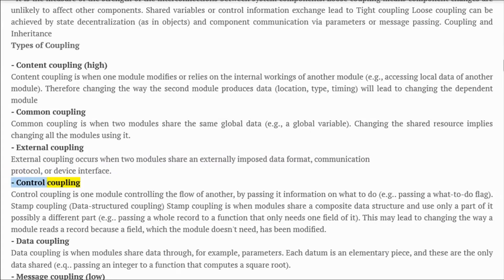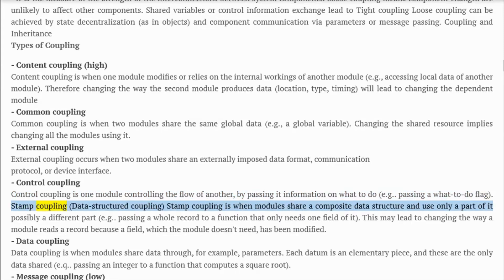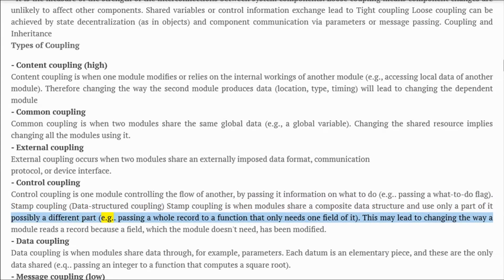Control coupling: one module controls the flow of another by passing it information on what to do, e.g., passing a 'what to do' flag. Stamp coupling (data structured coupling): when modules share a composite data structure and use only a part of it — possibly a different part — e.g., passing a whole record to a function that only needs one field of it.